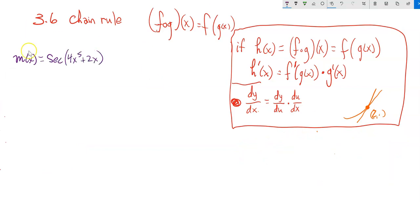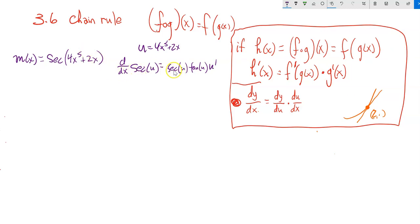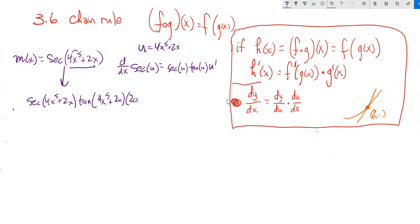Here's another example: I have secant of some expression. Using substitution, u is that inner expression, and I'm finding the derivative of secant of u. The derivative of secant is secant tangent, so this gives secant of that input times tangent of that input, times the derivative of the inside by chain rule — which is 20x to the fourth plus 2.